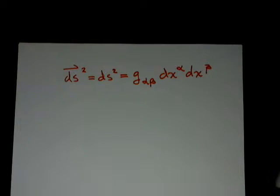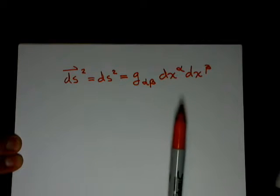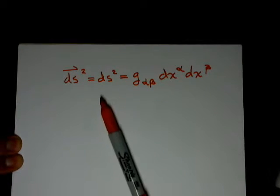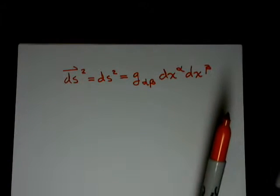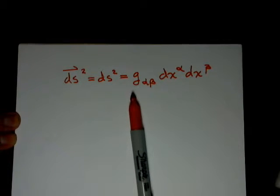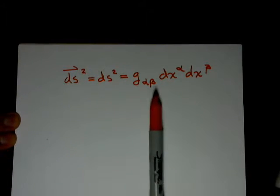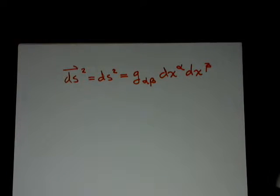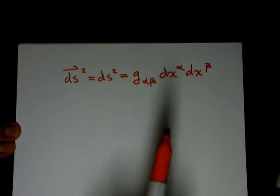Hello, in this video I'm going to be showing you the line element that is used a lot in general relativity, special relativity, that shows you how nearby distances are related. As an example, the Pythagorean Theorem in flat space is an example of this.